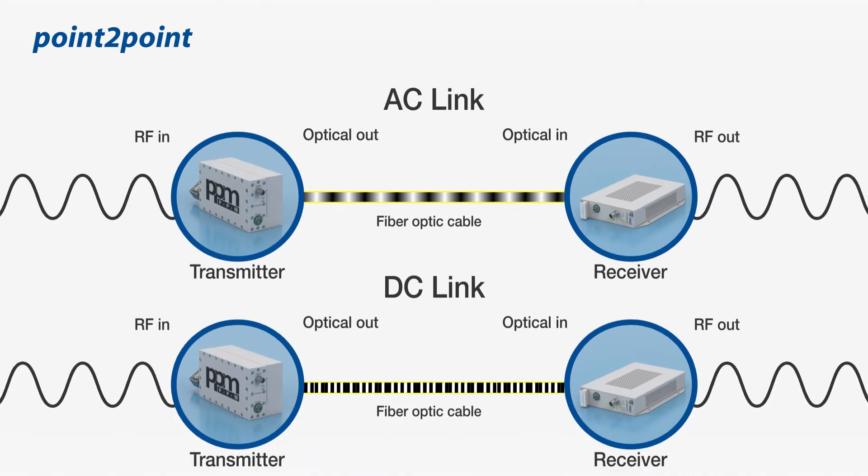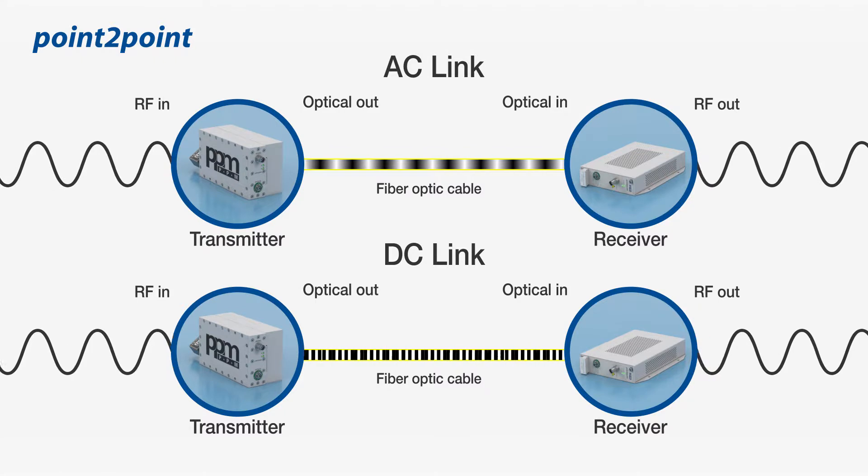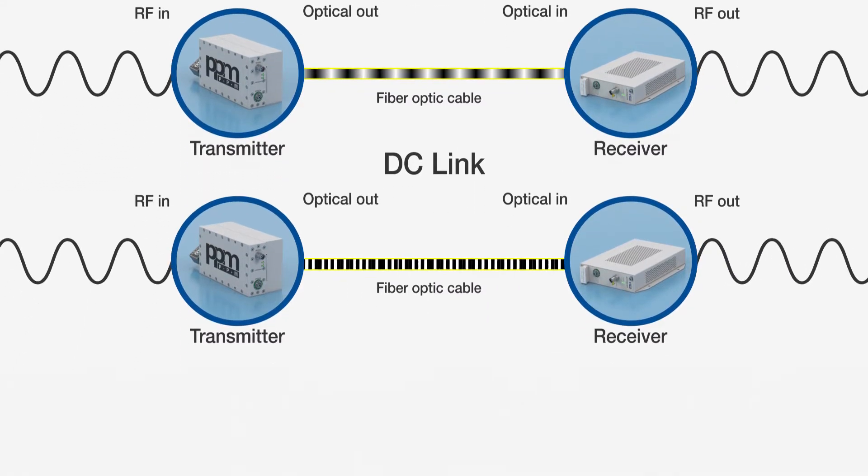At the receiver, an optical signal is converted back into an electrical signal. Therefore, a point-to-point link is transparent in any system.